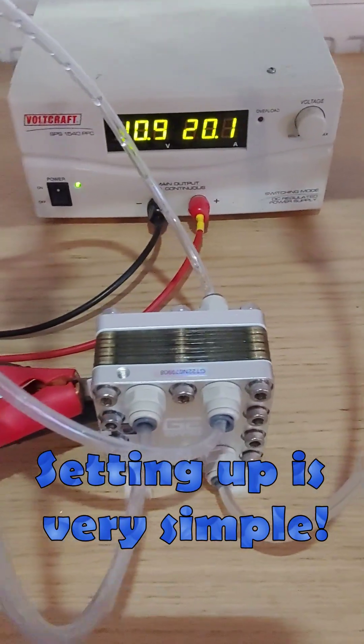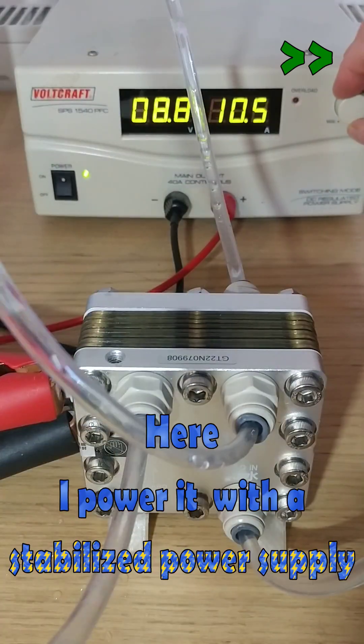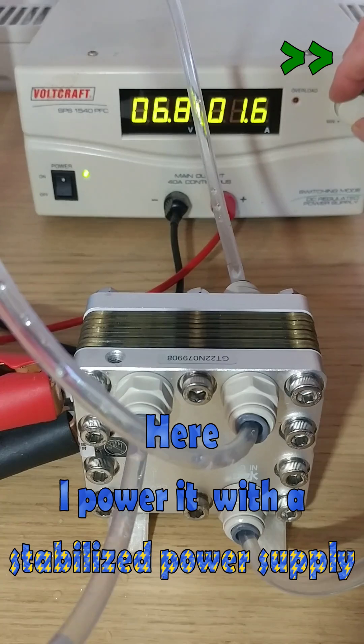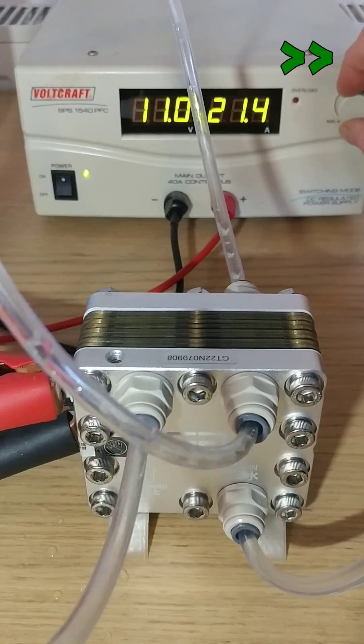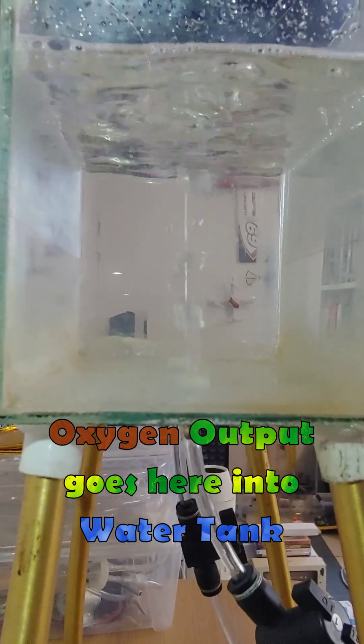Setting up is very simple. Here I power it with a stabilized power supply. This allows me to adjust the voltage as I wish and check the amperage. Oxygen output goes into water tank.